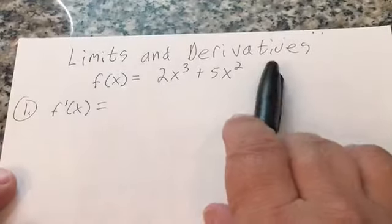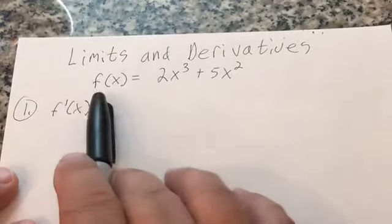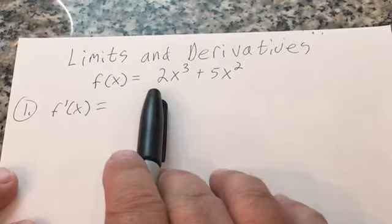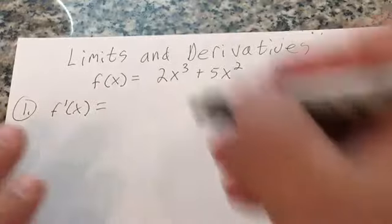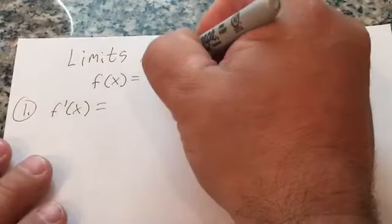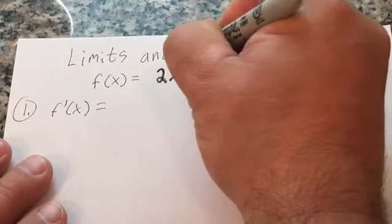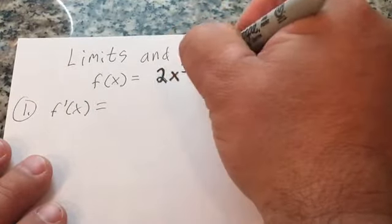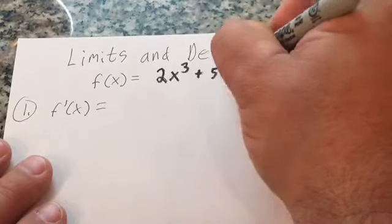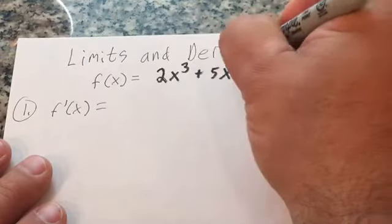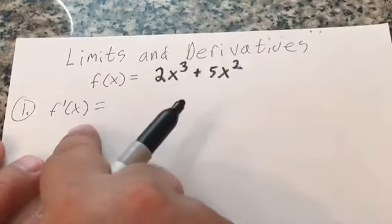We're going to do limits and derivatives today. I have this function f of x equals 2x cubed plus 5x squared. Let's take a look at it: 2x cubed plus 5x squared.